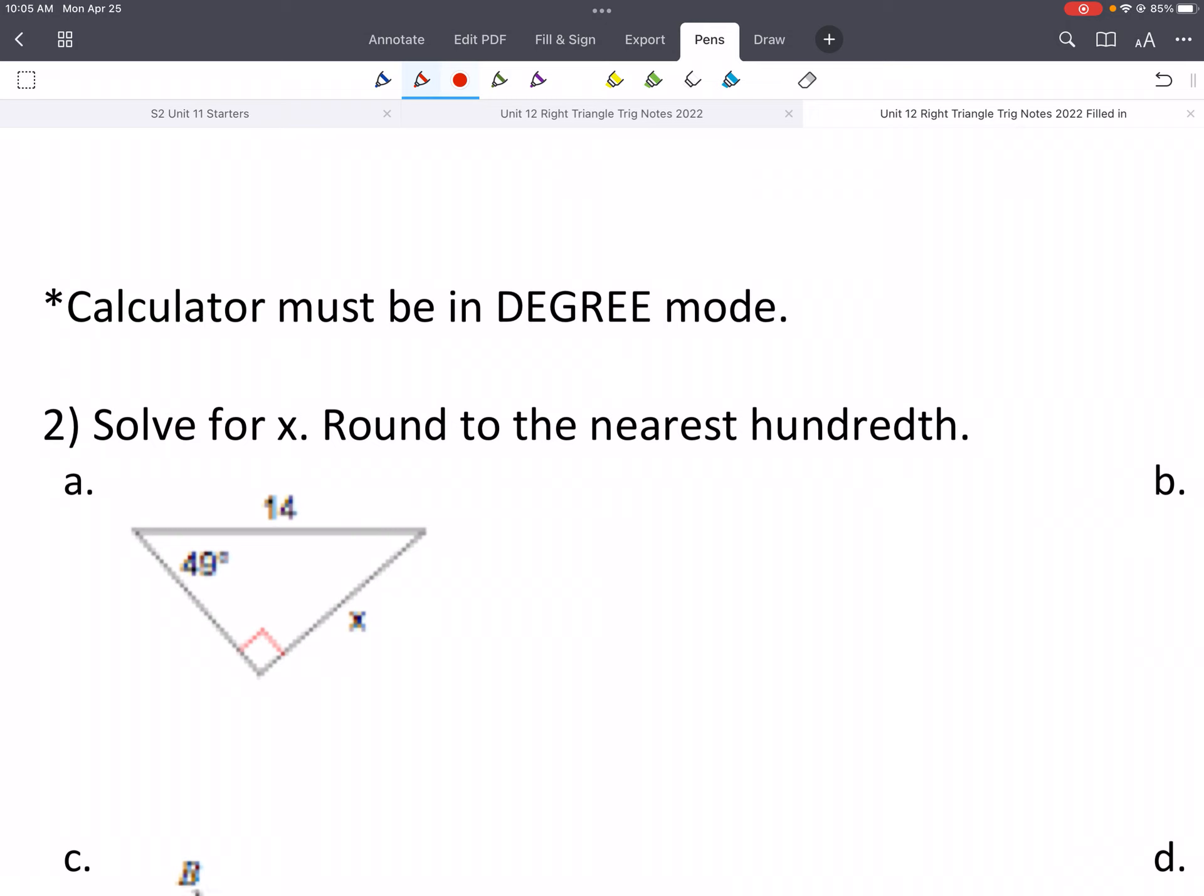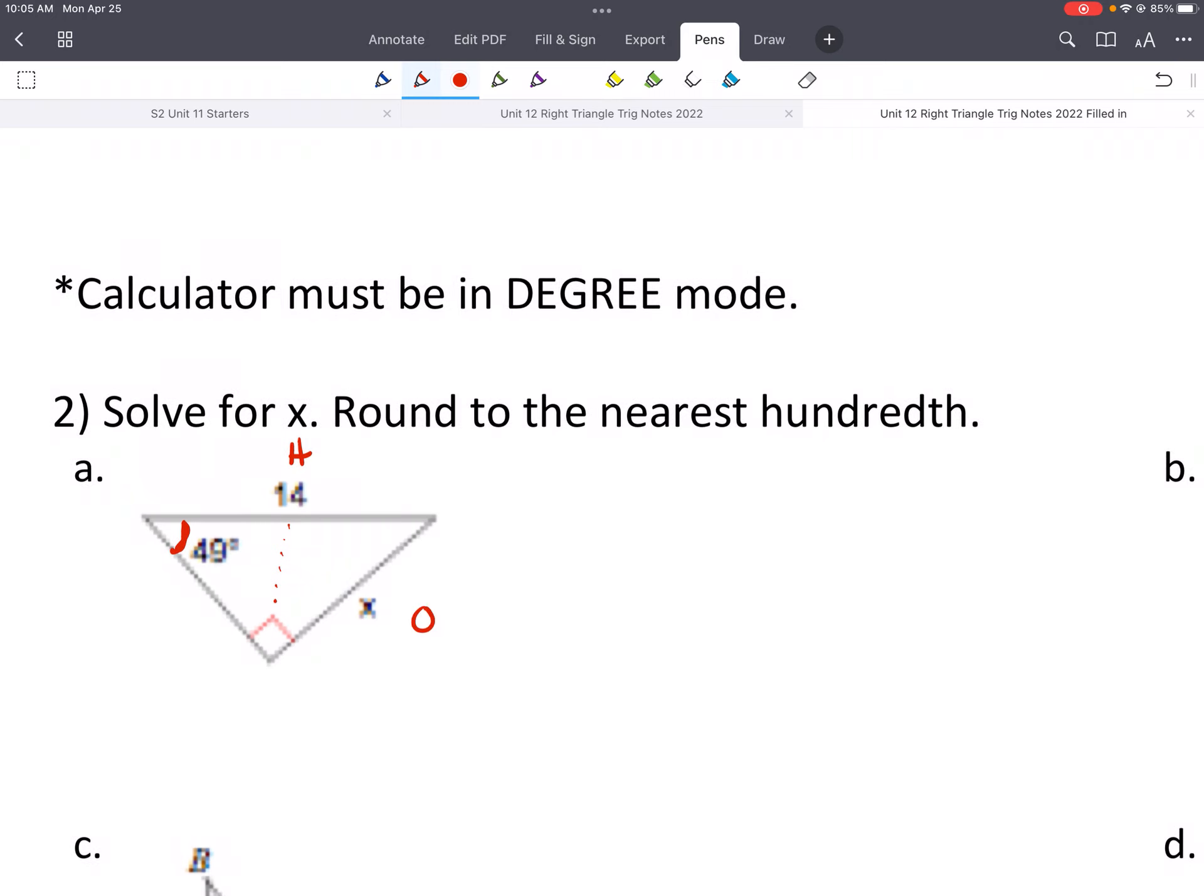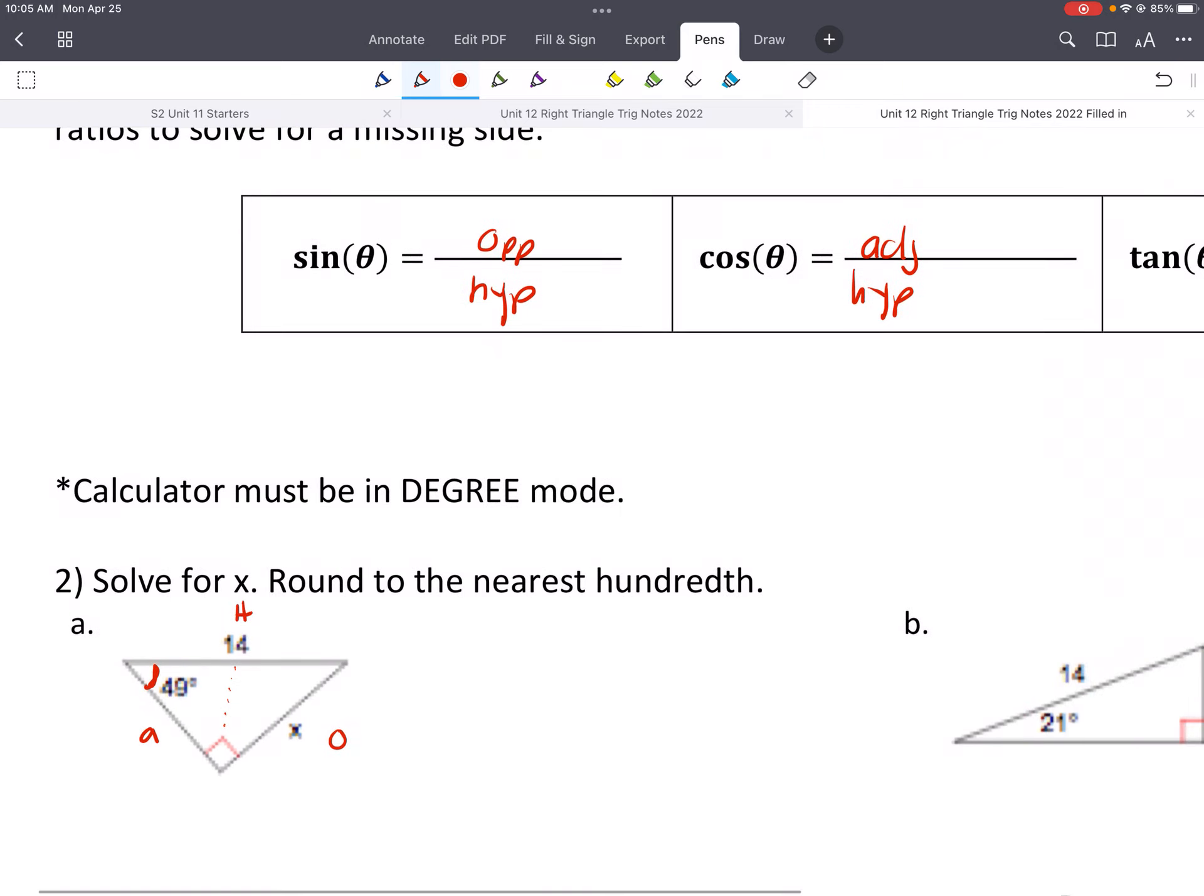So the same thing we've done in the past is we're going to label our sides. This is our reference angle, so this would be H, again, across from the 90 degrees, opposite, which is opposite of that reference angle, and then this would be adjacent. Last time we also talked about which trig function are we going to use. We have to use the trig function that we either have the sides that we know or what we need. So we know what H is, we need O, so which trig function uses O and H? So O and H is sine.